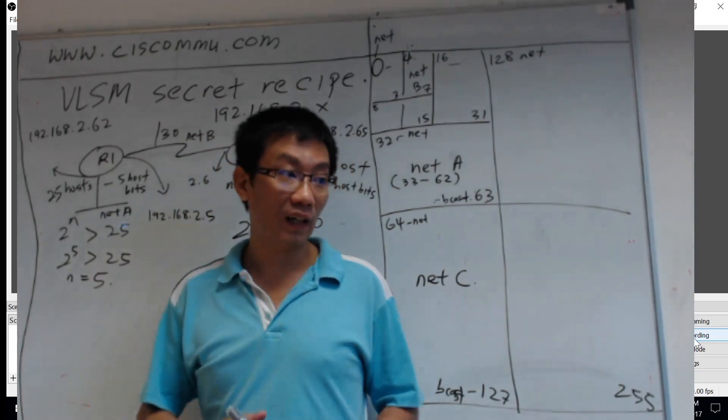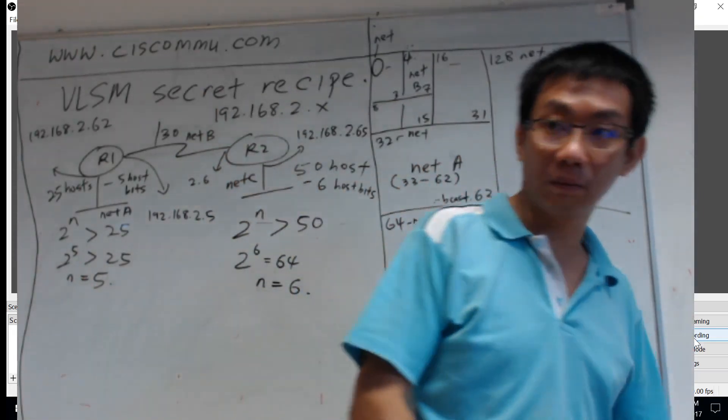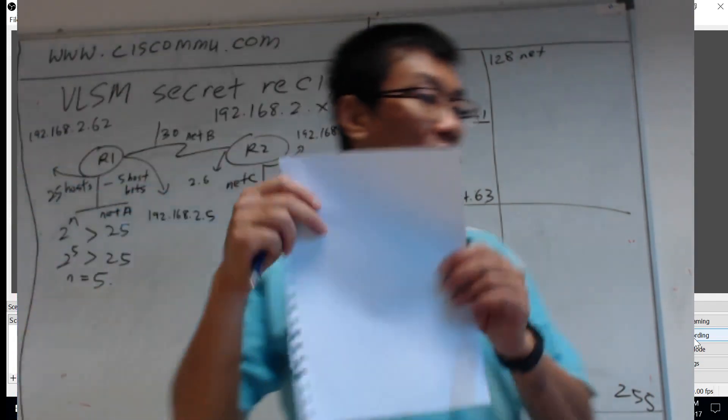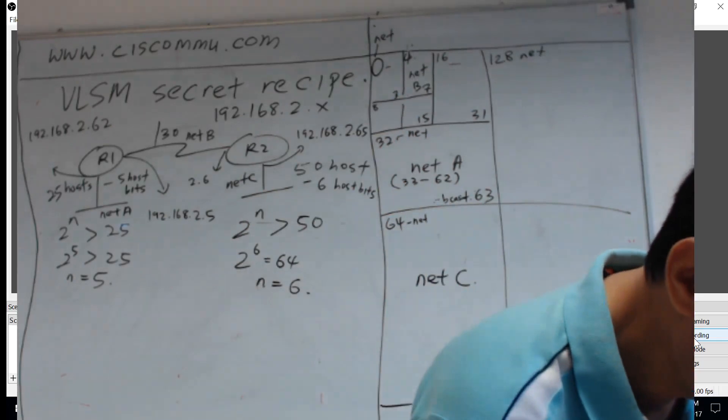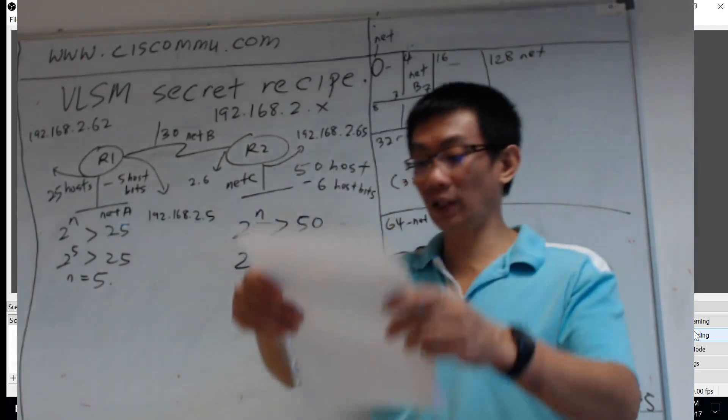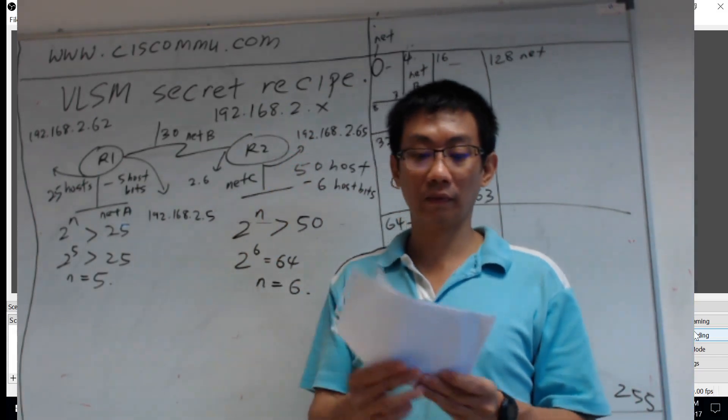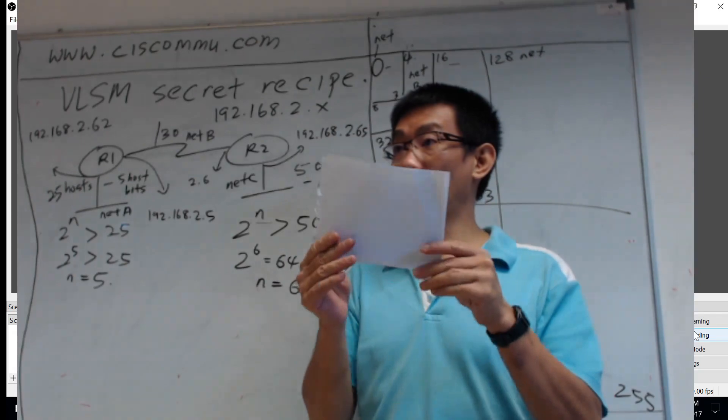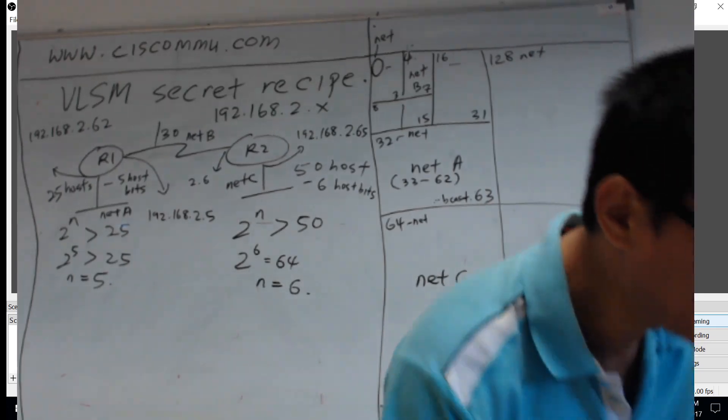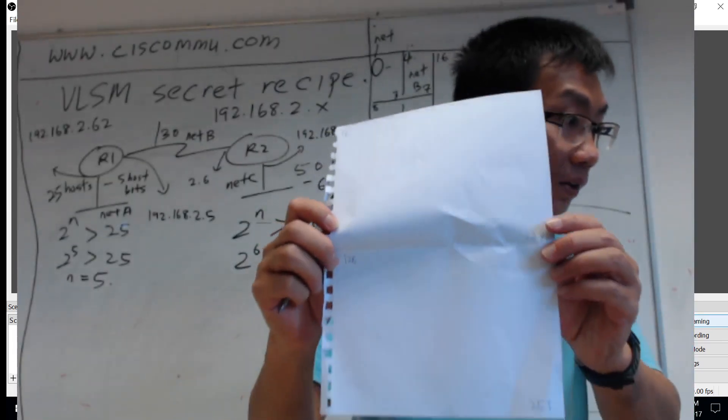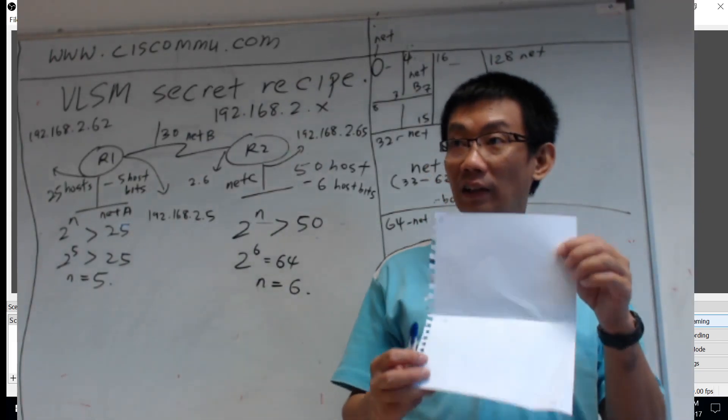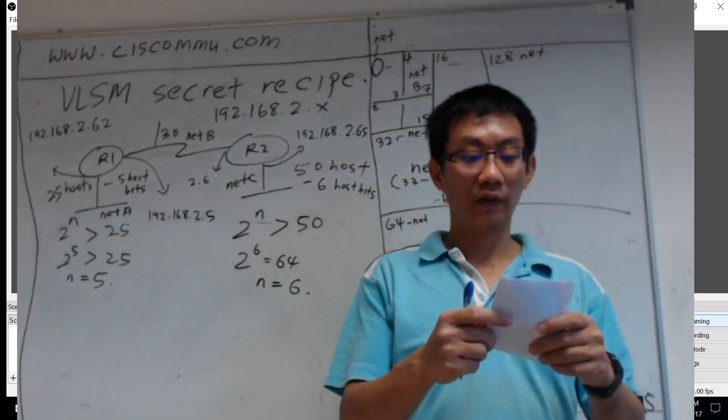All right, so very easy. So all you need to do is take a piece of paper, then here 0 to 255, then split it into half. Half, what is half of here? So which one will be 128, 127.